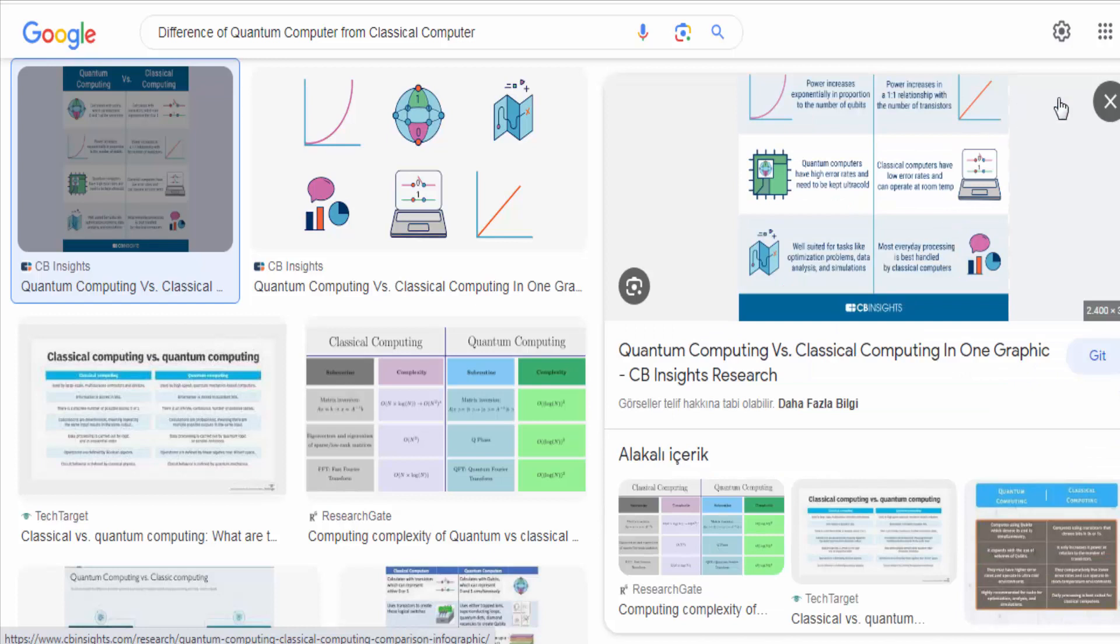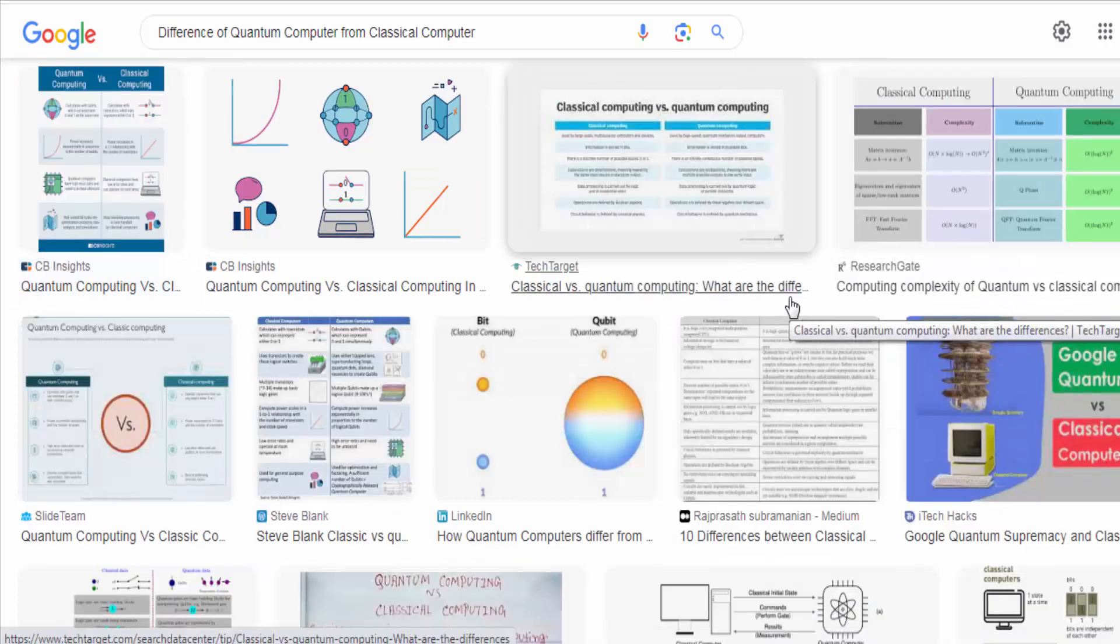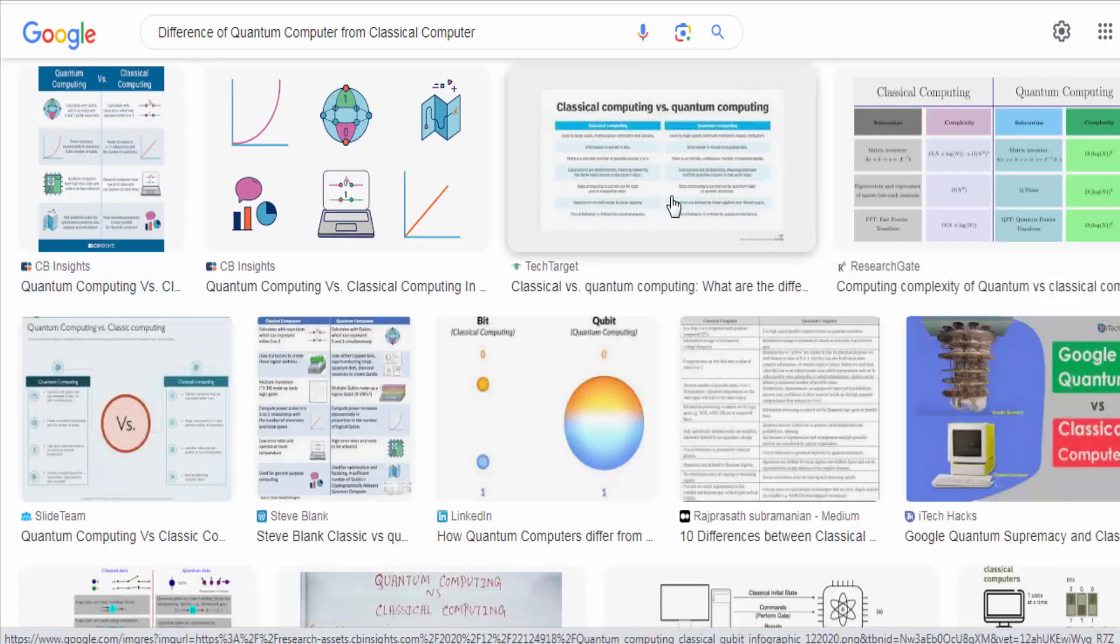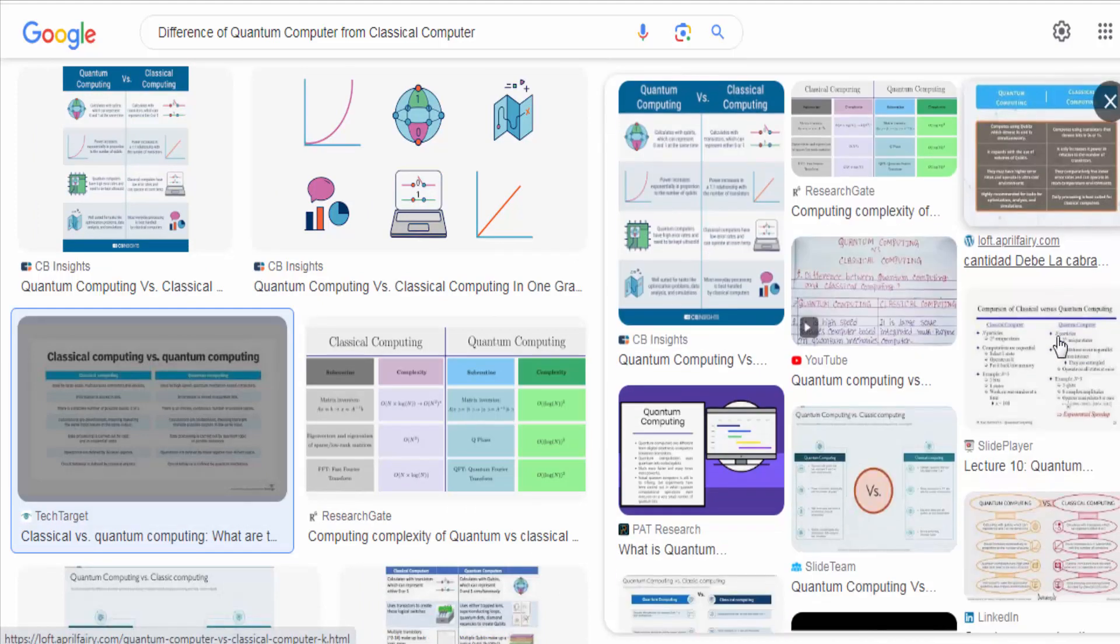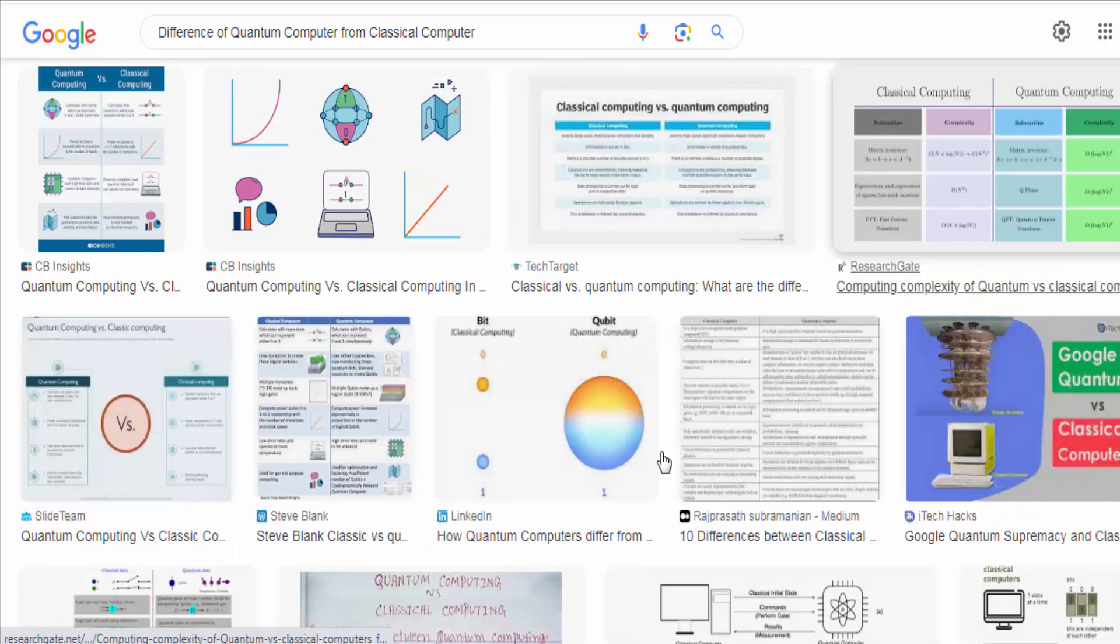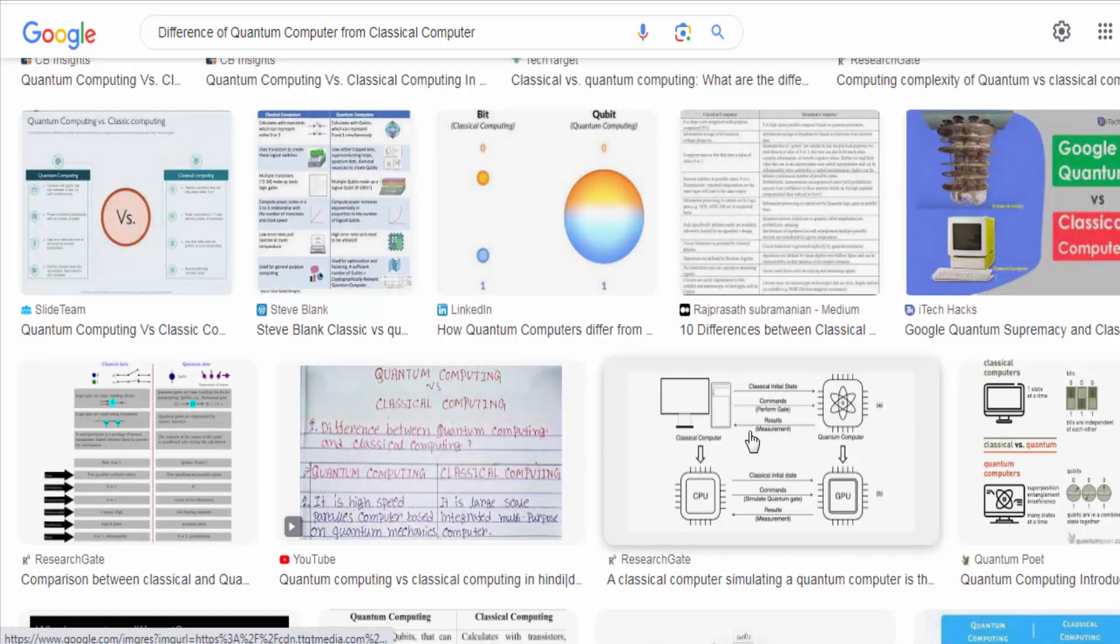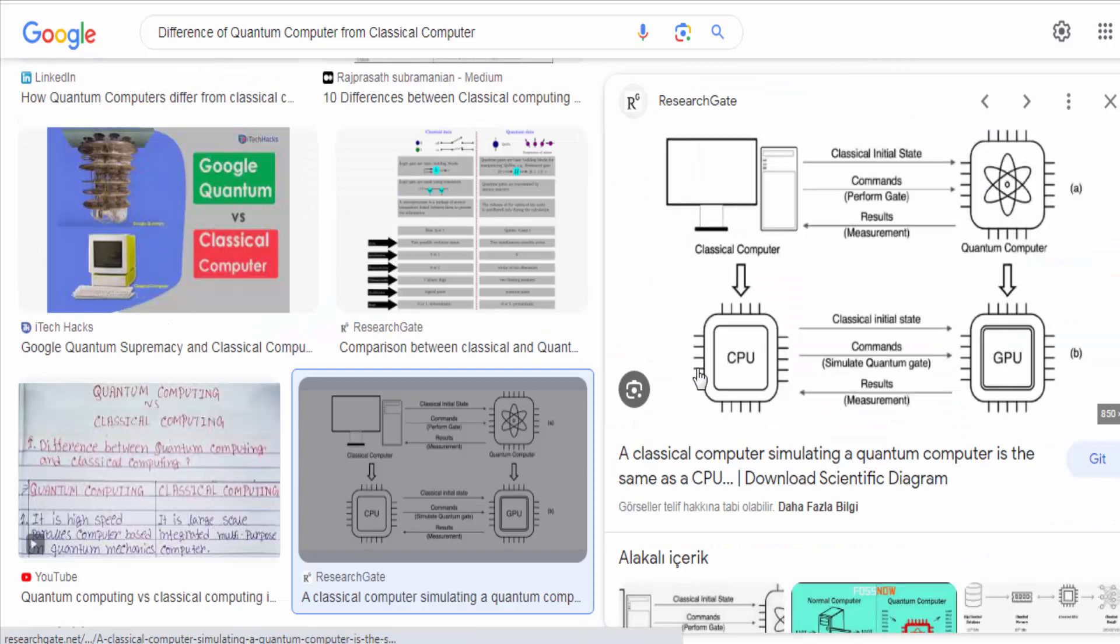Classical computers use bits as the basic unit of information, which can be either 0 or 1. Quantum computers, on the other hand, use quantum bits or qubits, which can represent a 0, a 1, or a superposition of both states simultaneously. This superposition allows qubits to hold much more information and perform parallel computations.